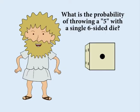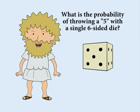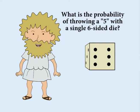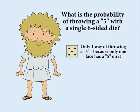For example, if you throw a single six-sided die with faces numbered one to six, what is the probability of throwing a five? There is only one way this can happen, as only one face of the die has a five on it. There are a total of six possible outcomes.